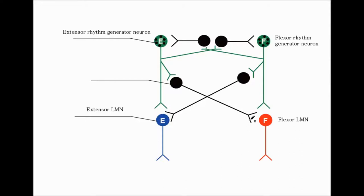This is the basic module of the CPG that we can find in the spinal cord — the proposed module. We need interneurons that are inhibitory.